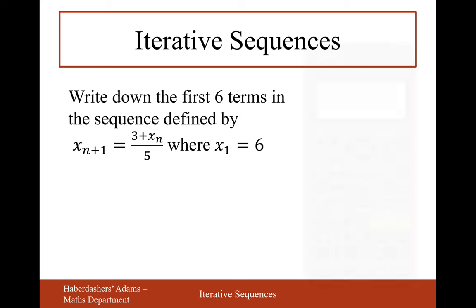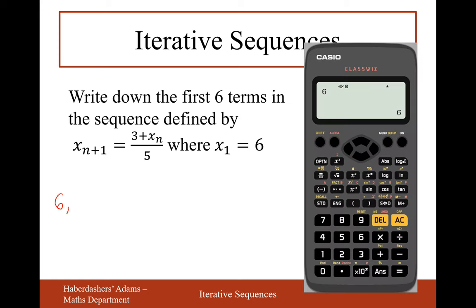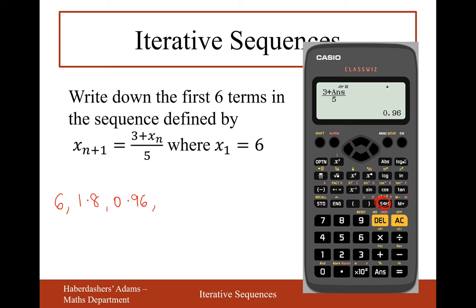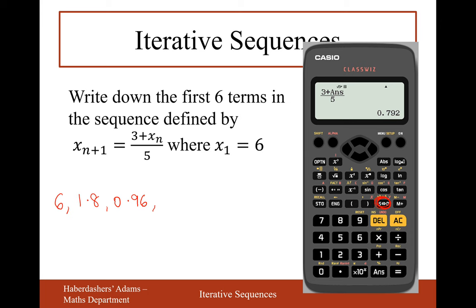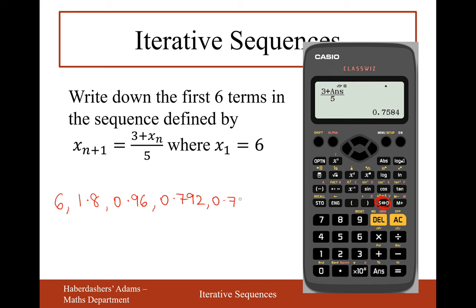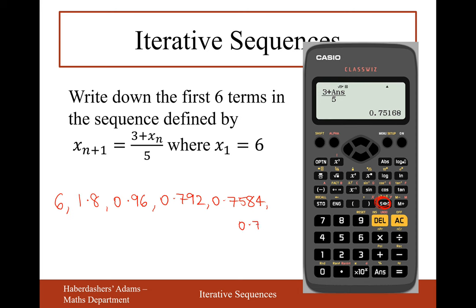Starting from 6, the formula is 3 plus answer divided by 5. Using the answer button gives 1.8. Press equals: 0.96. Then 0.792. The 4th term is 0.7584. Then 0.75168. Fractions are fine as answers too.